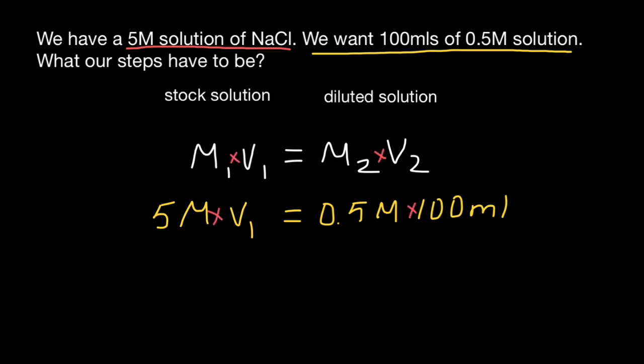If we multiply the right part, 0.5 times 100, we are going to get 50. And because we have a quotient on the left side, we also should get 50 here.